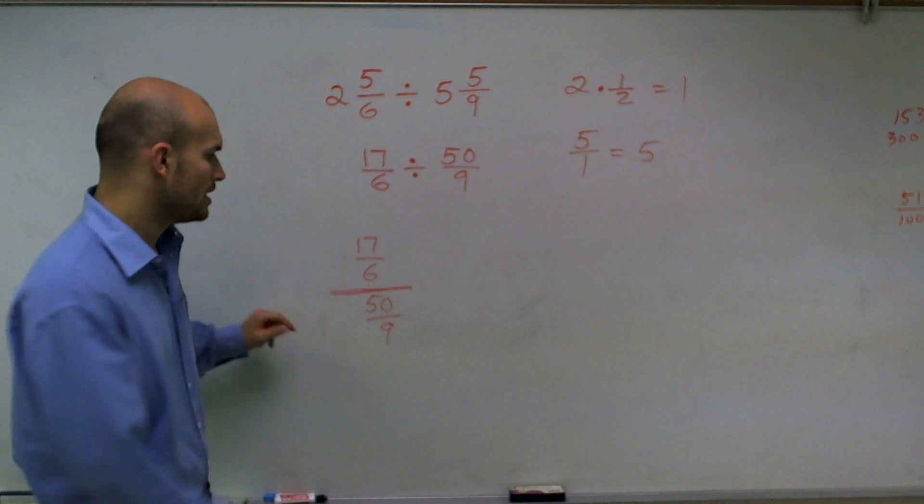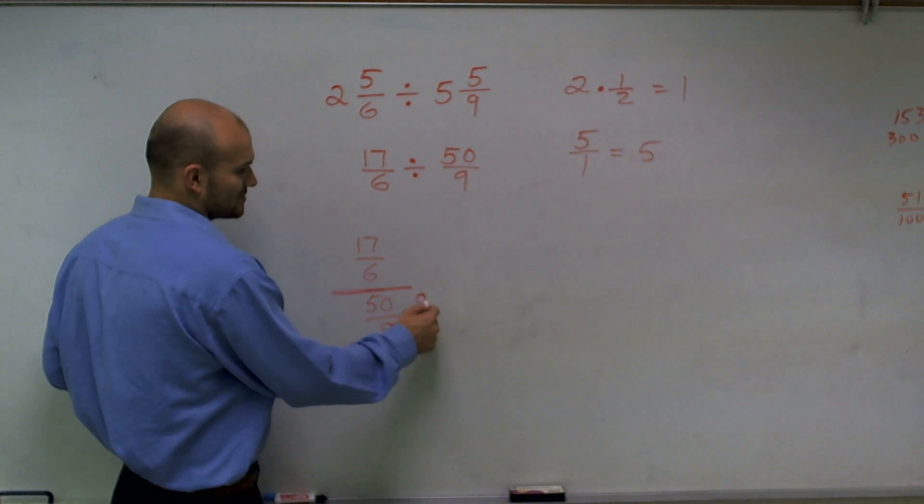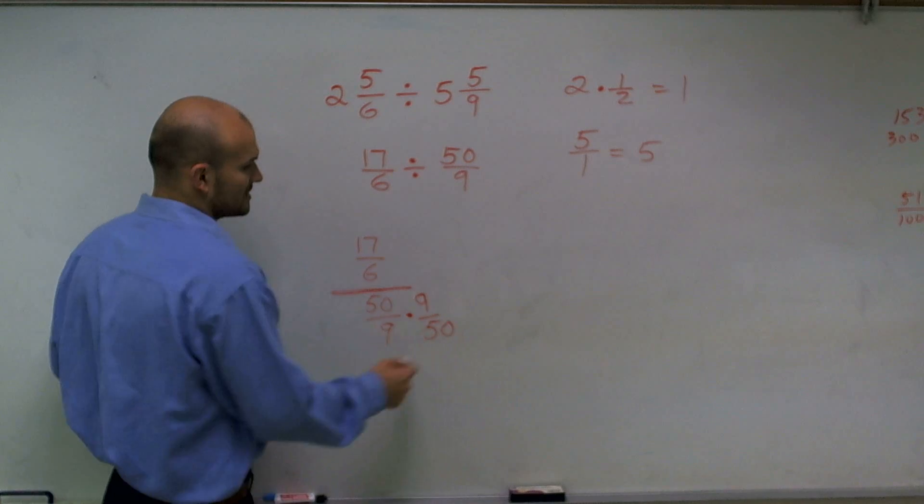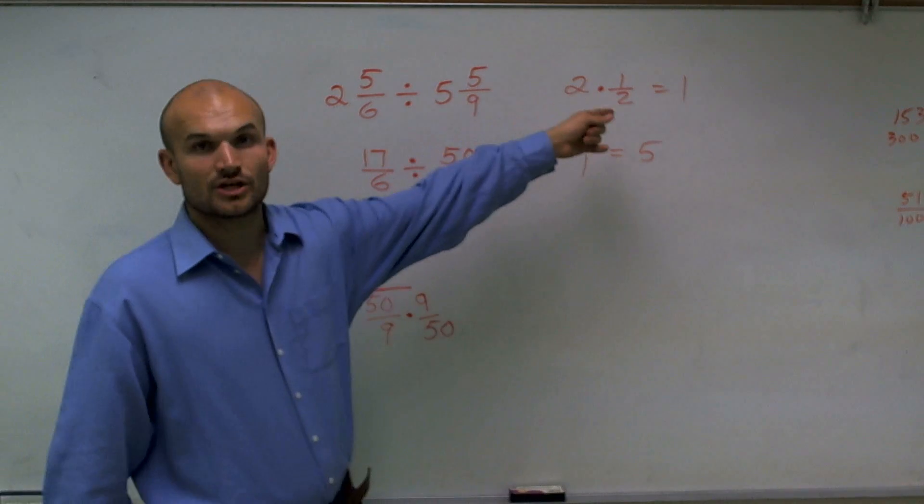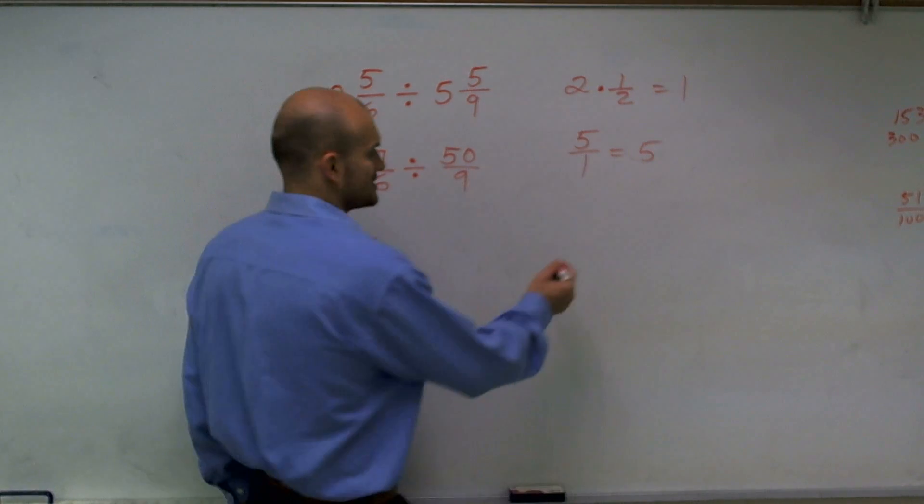Well, I can make this equal 1 by multiplying it by its reciprocal. Because if I multiply by its reciprocal, it's going to go to 1. One other thing I guess I forgot to tell you.